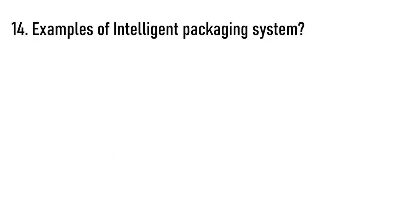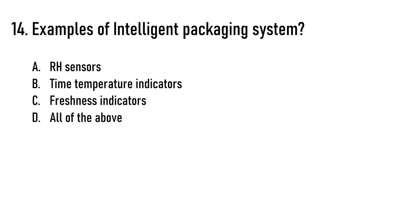Next question: Examples of intelligent packaging systems. Options are RH sensors, time temperature indicators, freshness indicators, or all of the above. The correct answer is all of the above.